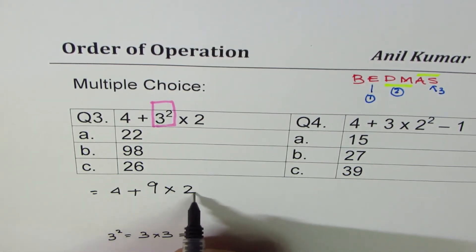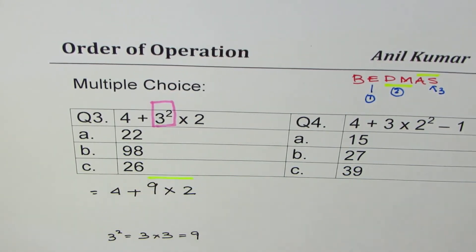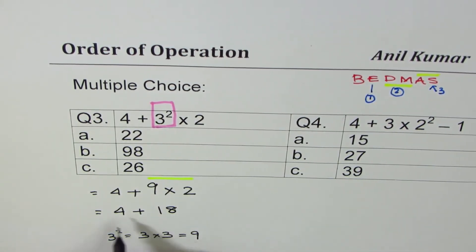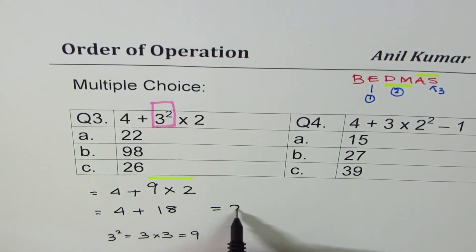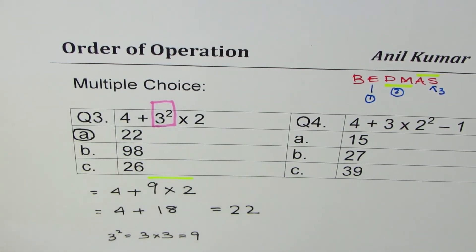Times 2. And now we will do multiplication, which is 9 times 2. So we get 4 plus 9 times 2 is 18. And when you add 4 and 18 we get 22. So A is the right answer here.